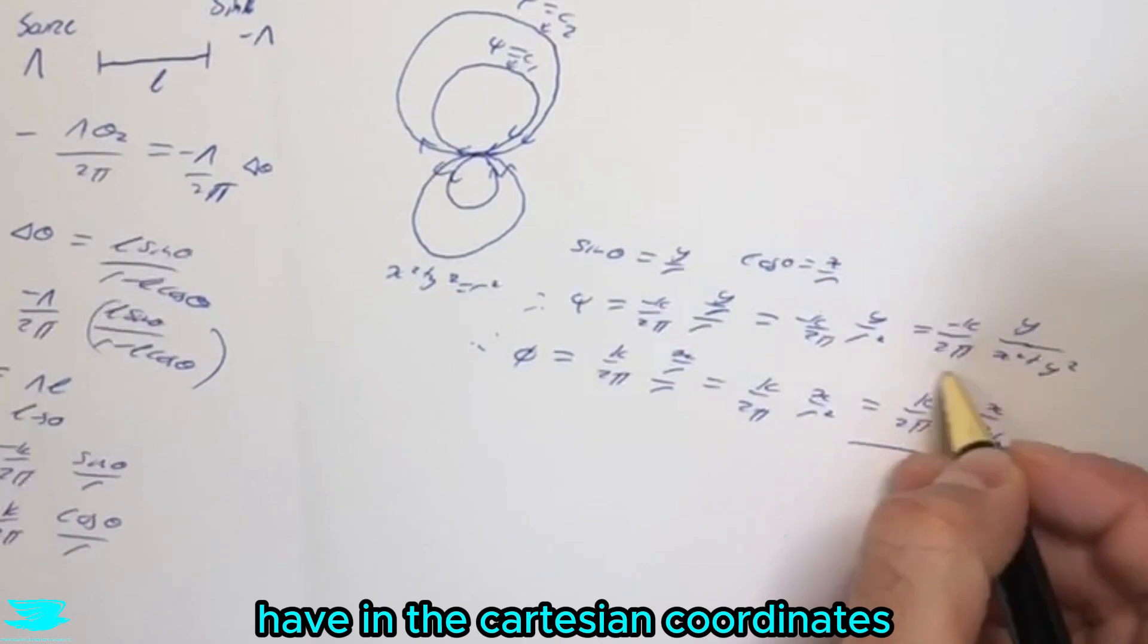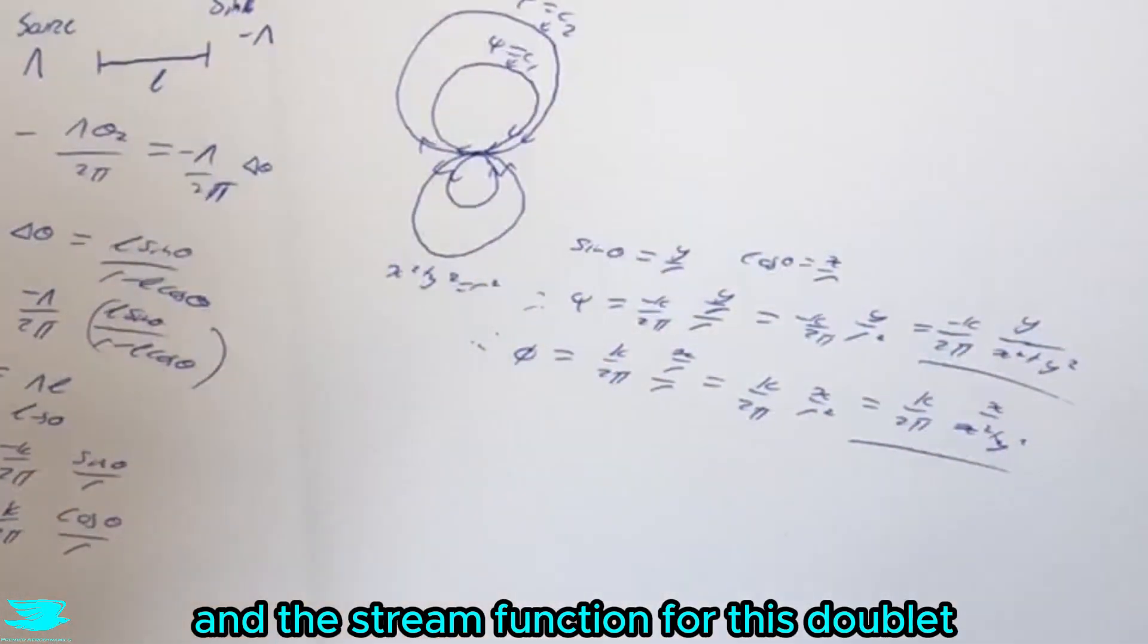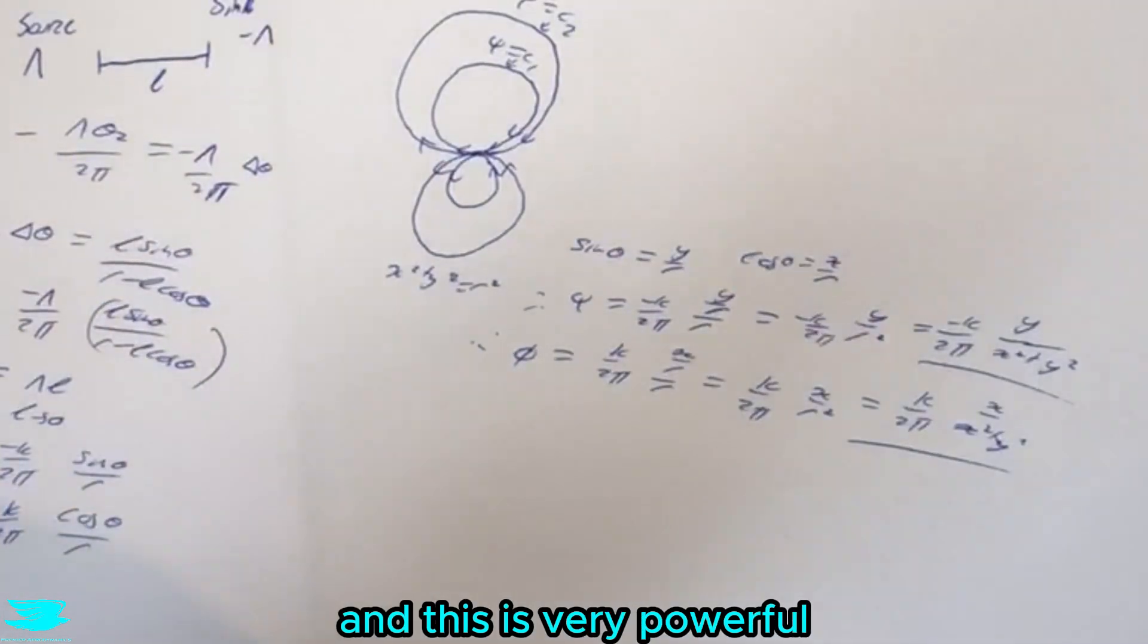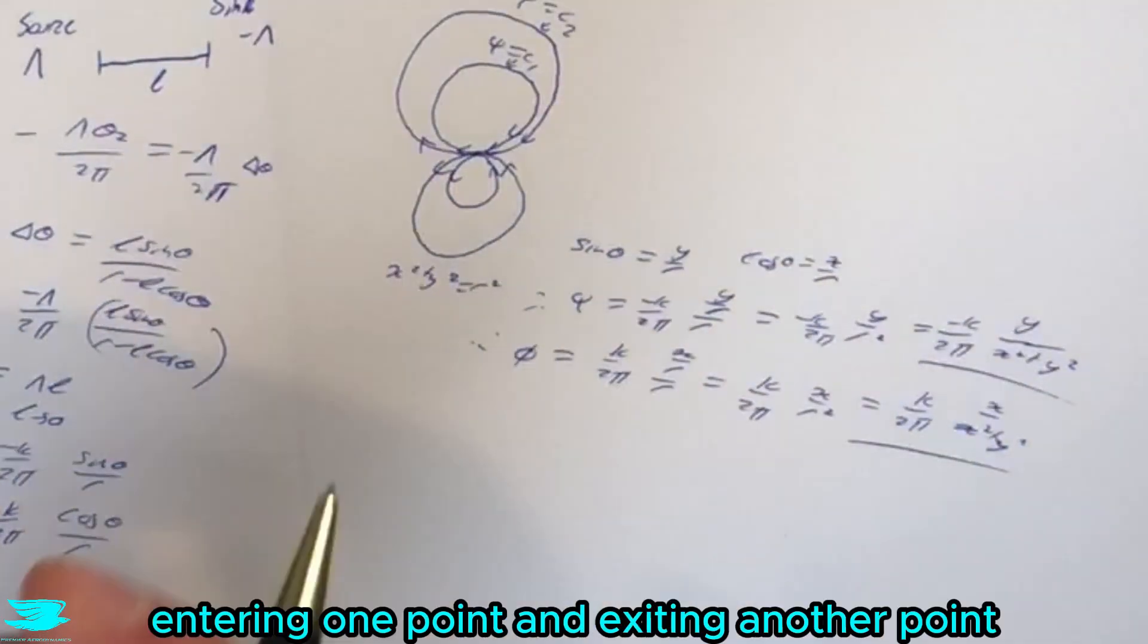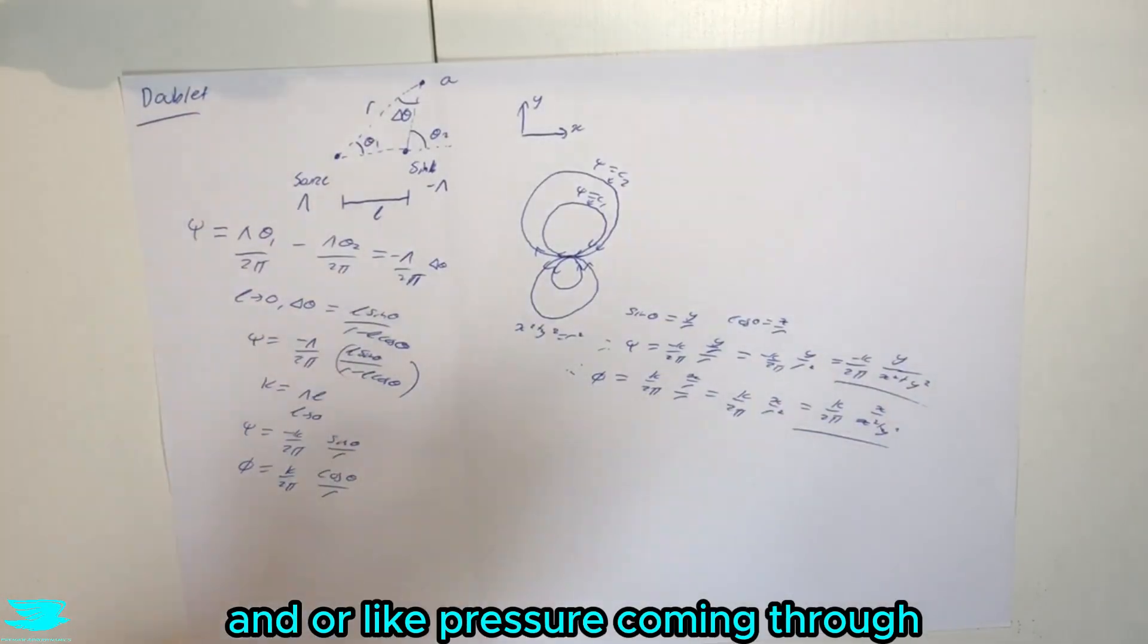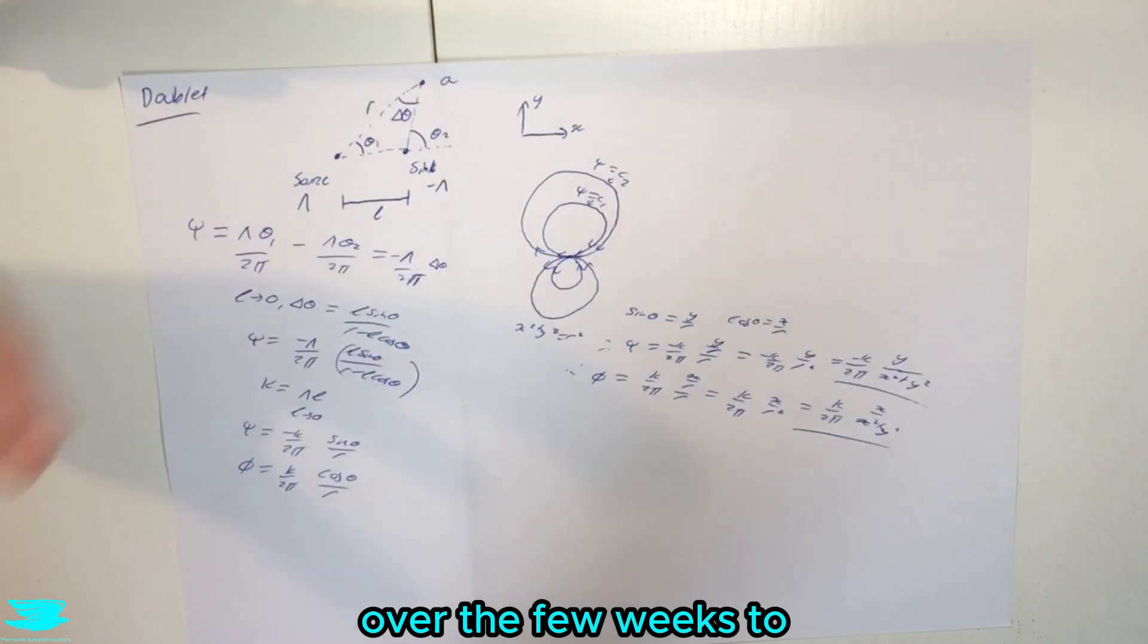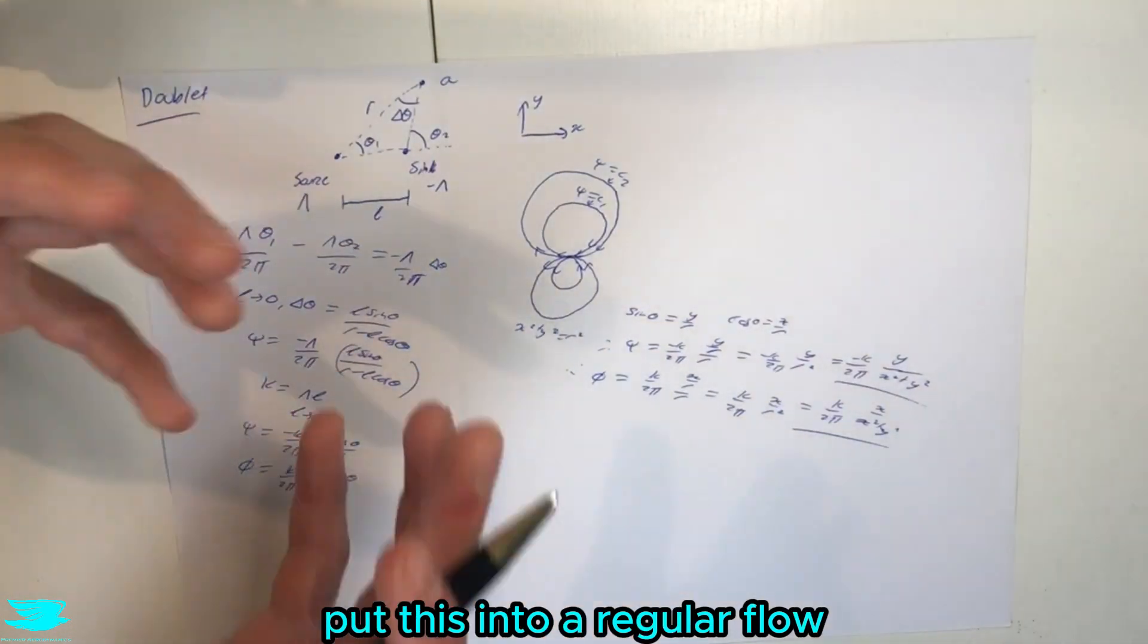So now we have, in the Cartesian coordinates, the velocity potential and the stream function for this doublet. So that is what a doublet is, and this is very powerful when you have a flow, for example, entering one point and then exiting another point very close to it. You might have suction and, or, like, pressure coming through. So that's where we would use it, and we can build upon this in the next videos that we're going over the few weeks to put this into a regular flow.